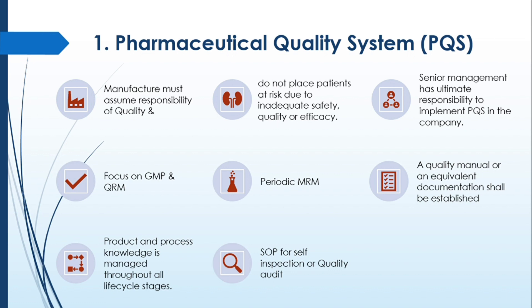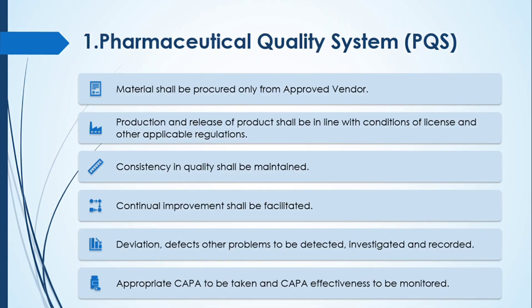That means, right from product development to dispatch and marketing, you have to provide knowledge to all persons involved in these activities. Development personnel must know about process development and the product. Similarly, persons involved in testing and persons involved in marketing should also have sufficient knowledge of the product and process as required. Procedures for self-inspection or quality audit should also be established, and materials shall be procured only from approved vendors.